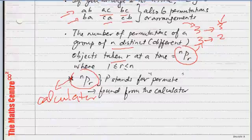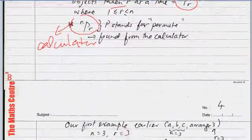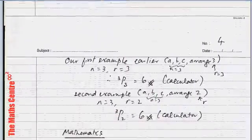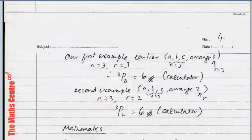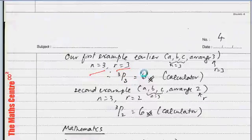Let's move on. In our first example, as I said, we had three objects, a, b, and c. So, n was 3, and r was 3, because we took all three and arranged them to get 6. And if you plug this into the calculator, 3P3, you will get 6.